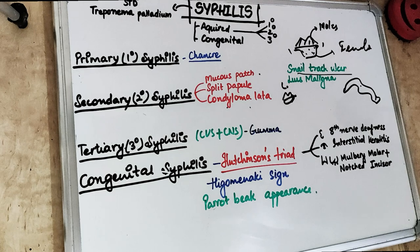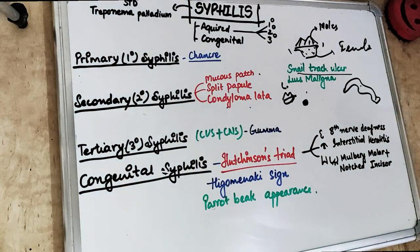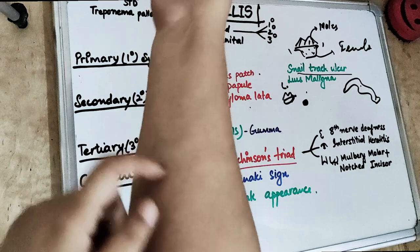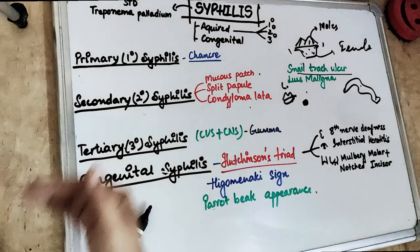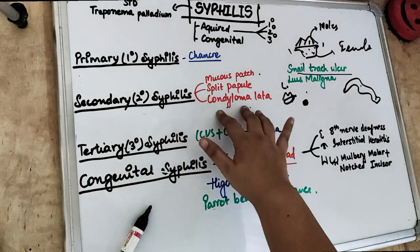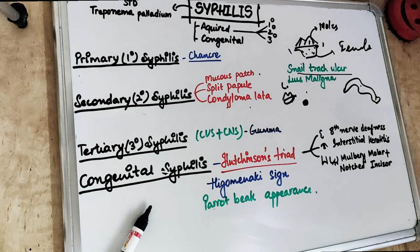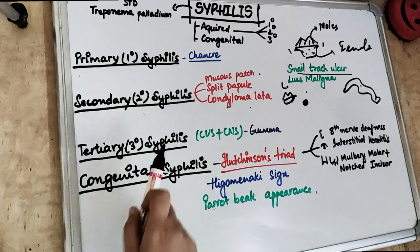In secondary syphilis we also have hyperpigmented lesions — large hyperpigmented macules, like big mole-like spots. These are seen in immunocompromised individuals, such as those with HIV or other diseases. In such individuals, these macules appear in an explosive and widespread form and are called lues maligna. So lues maligna are hyperpigmented macules seen in secondary syphilis in immunocompromised patients.